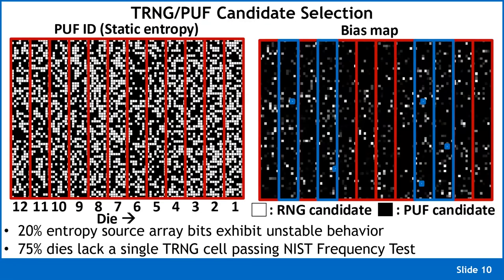We measured this PUF array on 12 different dies. On the left is the static PUF ID, and on the right is a bias map showing where on the bathtub curve each cell falls. Dark pixels are cells at the extremes (good PUF bits); white pixels are cells right in the center at 50% probability; shades of gray indicate how far from that center point each cell is.